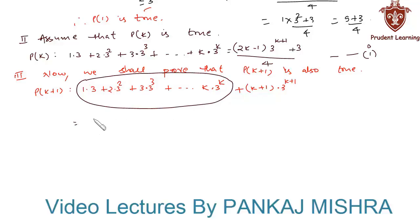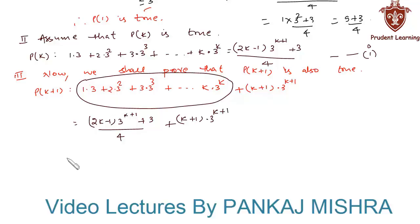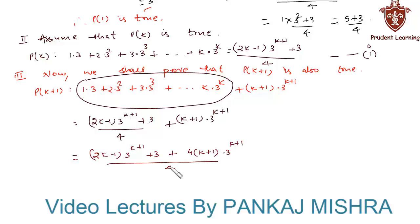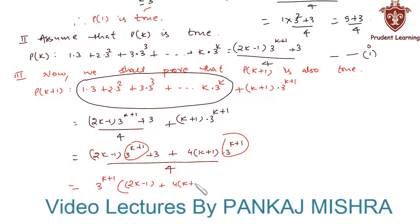So we substitute that quantity as (2k − 1)·3^(k+1) + 3 over 4, and keep the remaining term (k+1)·3^(k+1). This gives us [(2k − 1)·3^(k+1) + 3 + 4(k+1)·3^(k+1)] all over 4, taking 4 as the LCM. We then take 3^(k+1) common from the first and third terms in the numerator, giving 3^(k+1)·(2k − 1 + 4(k+1)) + 3, all over 4.